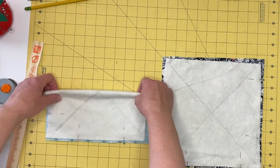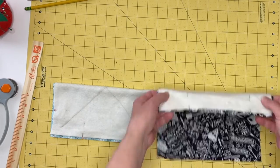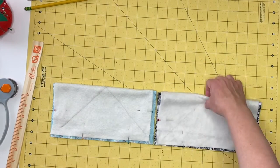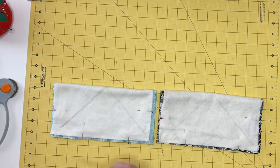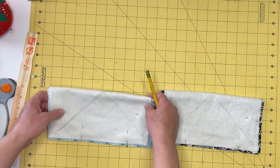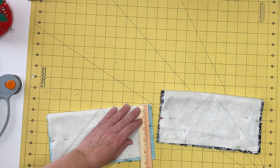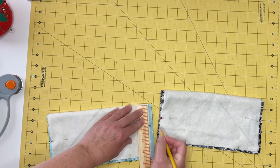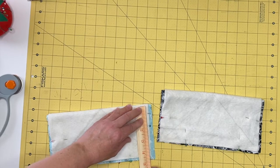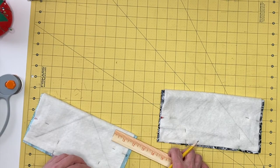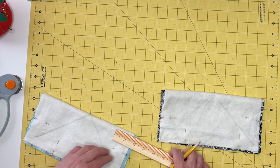Fold one square in half with the right sides touching. Measure and mark 3 quarters of an inch down from the fold on the raw edge of the square. On the same corner, measure and mark 2 inches in from the edge.